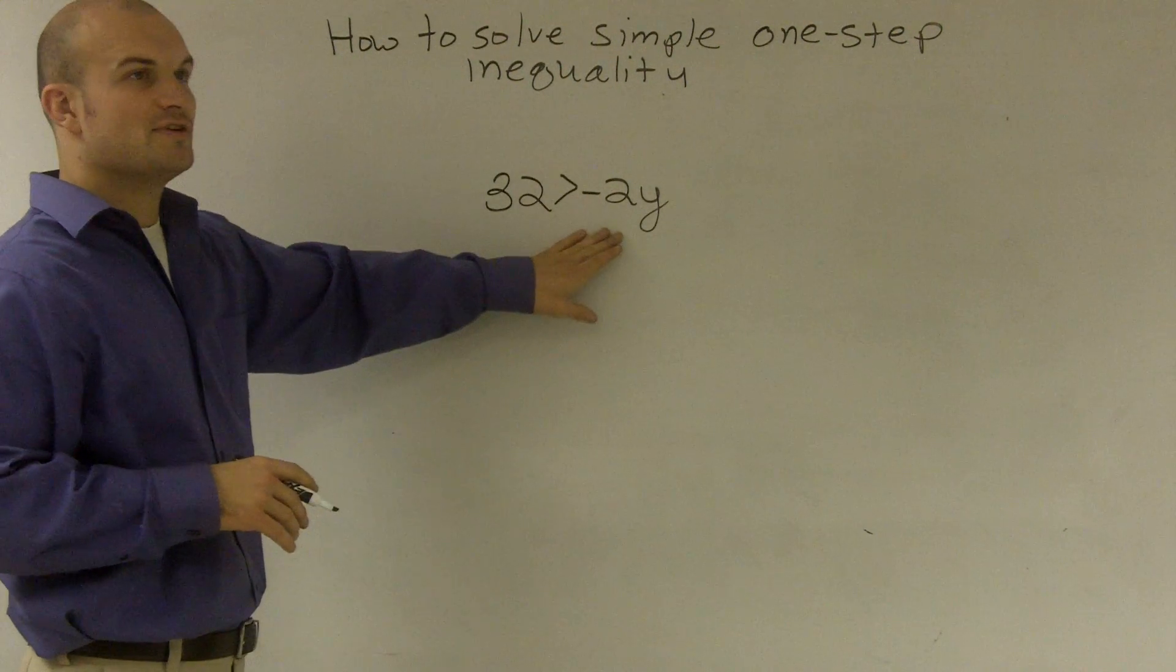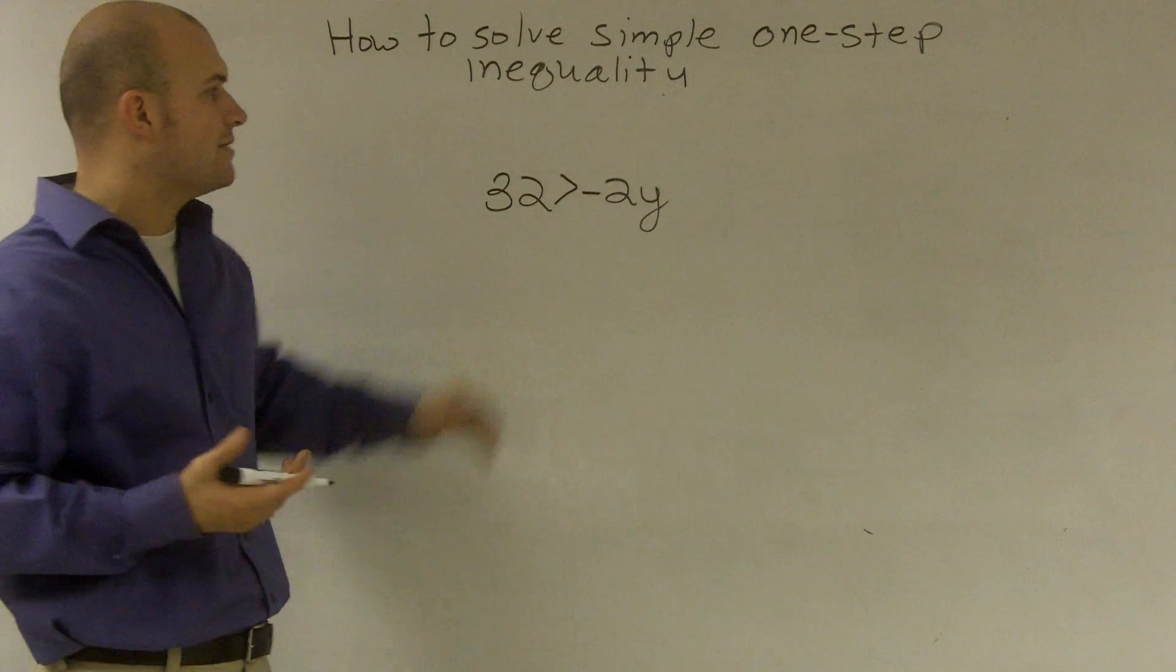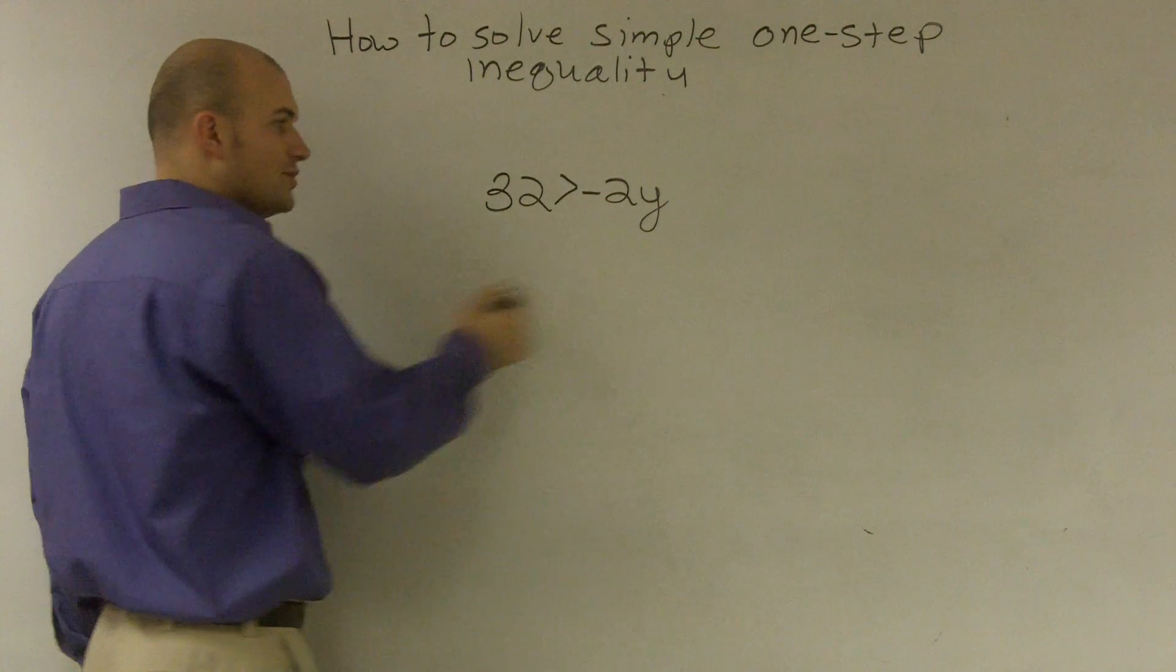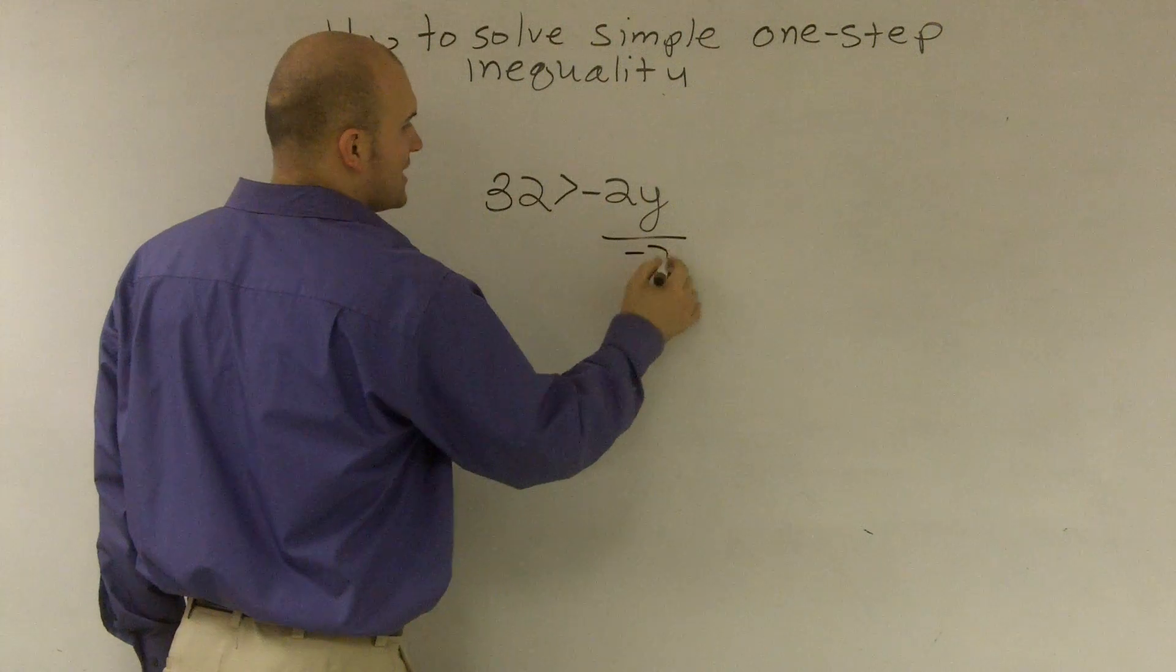So on this first thing, what we always want to do is use the inverse operations. If I notice on my variable, I'm being multiplied by negative 2, so I'm going to have to divide by negative 2.